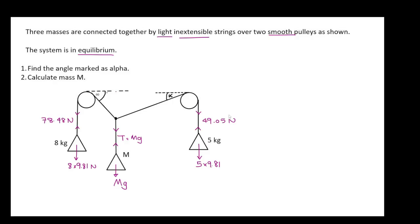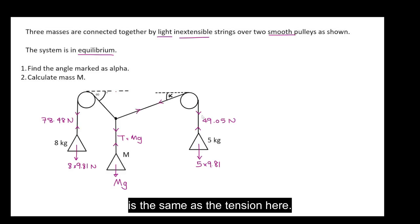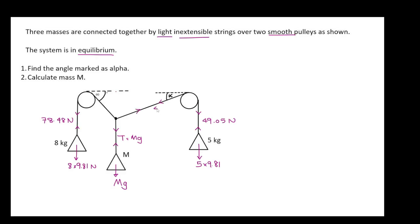Now we also know that these are smooth pulleys. So the tension here is the same as the tension here. So that will be 49.05 newtons.